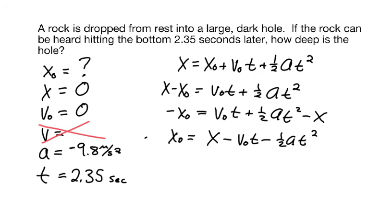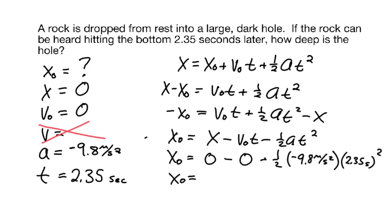Now that I've got it rearranged in terms of x0, I'll plug in the values that I know. So x0 is equal to the ending position, which is zero, minus the starting velocity was zero, so zero times t is going to be zero again, minus 1/2 times acceleration, negative 9.8 meters per second squared, times t squared, so that's 2.35 seconds squared. And so we get an answer here that x0 is equal to a positive 27.1 meters. That is indeed a very deep hole.